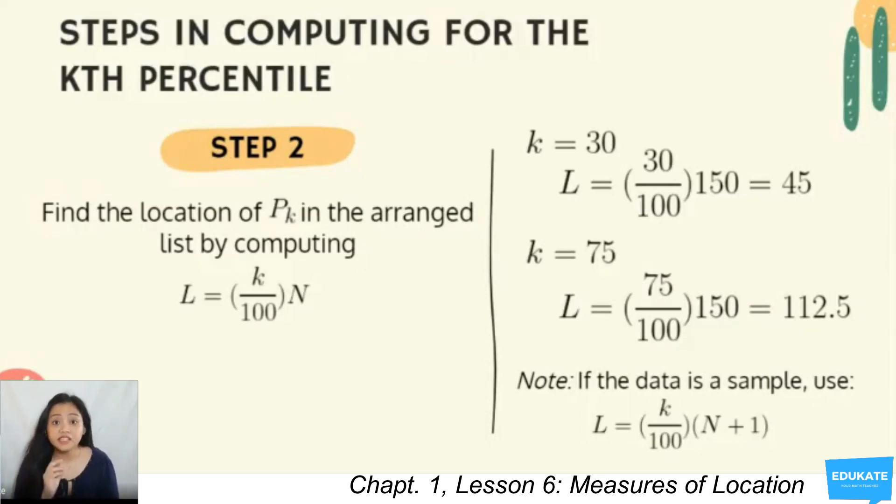Your 30th percentile is the 45th data in your dataset. How about if we're looking for the 75th percentile? Your K is equal to 75. That's going to be 75 over 100 times 150, which is equal to 112.5. We now have a decimal value. Note that if your data is a sample, use K over 100 times N plus 1. In our given example, it is a population.